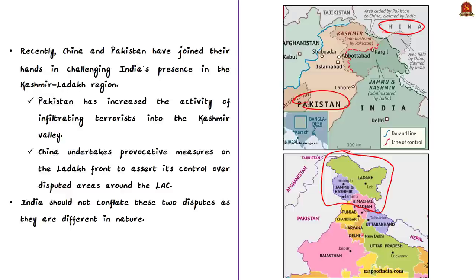The author says that in recent days China and Pakistan have joined hands in challenging India's presence in the Kashmir-Ladakh region. Pakistan has increased terrorist infiltration into the Kashmir valley. At the same time, China has undertaken provocative measures on the Ladakh front to assert control over disputed areas around the Line of Actual Control. The author believes India should not conflate these two disputes as they are different in nature.